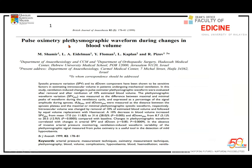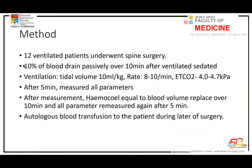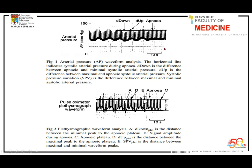Can a pulse oximeter give similar information to an arterial line? The pulse oximeter is available everywhere, while arterial lines are not easy to obtain. A study of 12 ventilated patients found that 10% of blood was drained passively over 10 minutes, and the pulse oximeter waveform was found to correlate with the arterial line waveform. The conclusion is that pulse oximeter correlates with artery waveform.